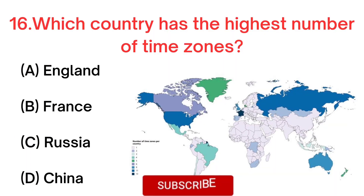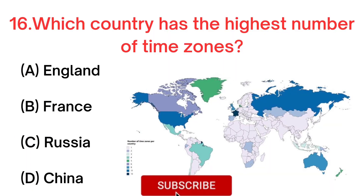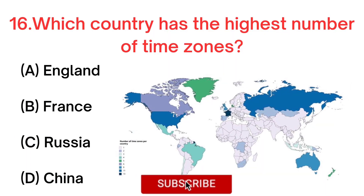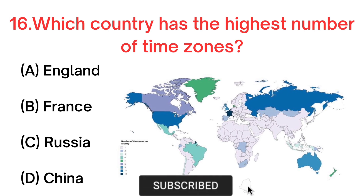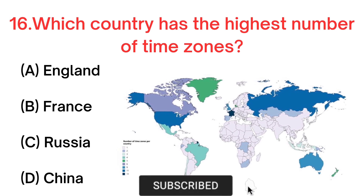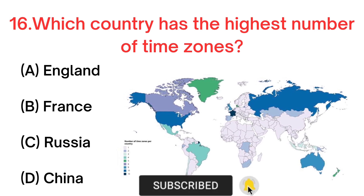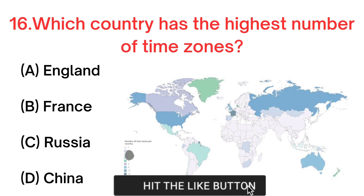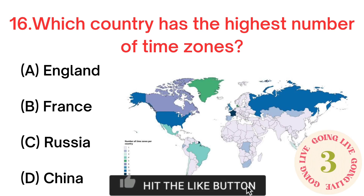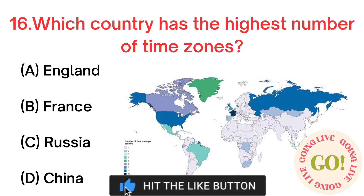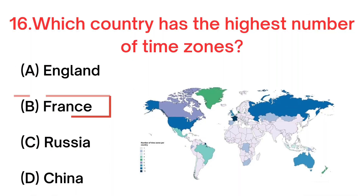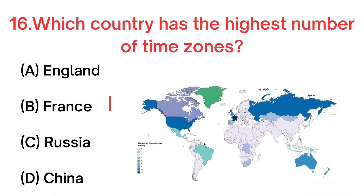Your next question. Which country has the highest number of time zones? A. England. B. France. C. Russia. D. China. Your answer is B. France.